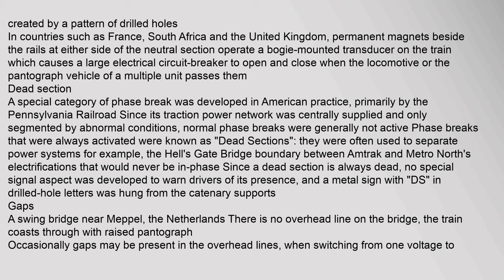The position light signal aspect was originally devised by the Pennsylvania Railroad and continued by Amtrak, and has been adopted by Metro North. Metal signs with drilled-hole letters were hung from the catenary supports. In countries such as France, South Africa, and the United Kingdom, permanent magnets beside the rails at either side of the neutral section operate a bogie-mounted transducer on the train, causing a large electrical circuit breaker to open and close as the locomotive passes.